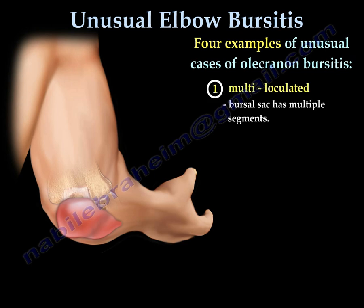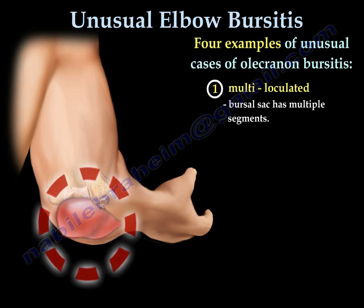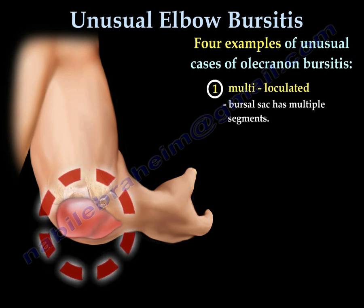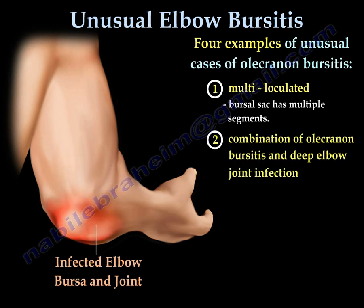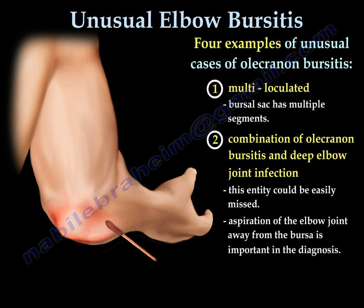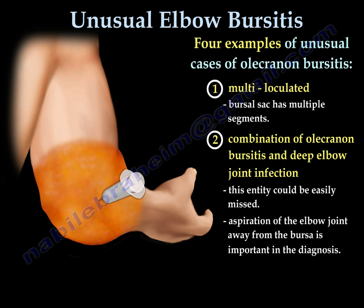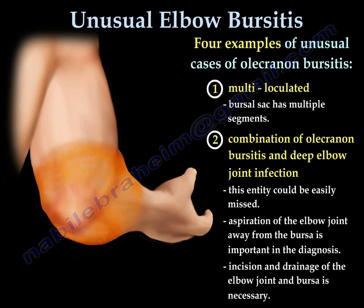Number one: multi-loculated bursal sac with multiple segments. Number two: combination of olecranon bursitis and deep elbow joint infection. This entity could be easily missed — the deep infection could be easily missed. Aspiration of the elbow joint is important for the diagnosis. In this case, incision and drainage of the elbow joint and the bursa is necessary.